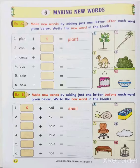Assalamualaikum warahmatullahi wabarakatuh. How are you all, my dear students? Hope everyone is well. Myself Tulu Bhaiji. Today we are going to start a new lesson from English Grammar — Lesson number 6: Making New Words.